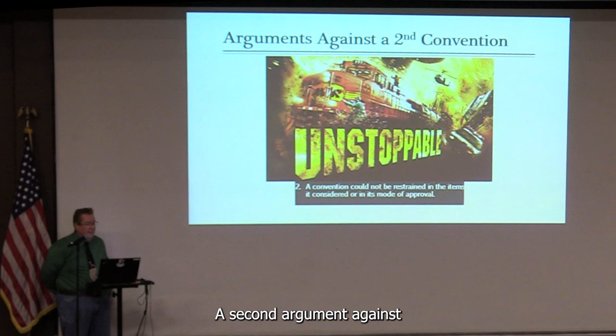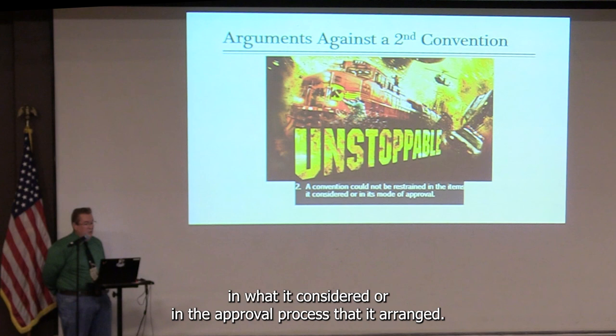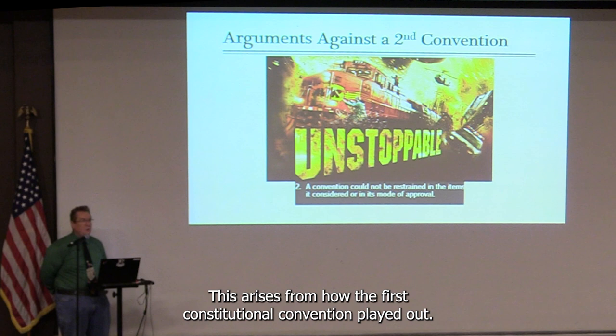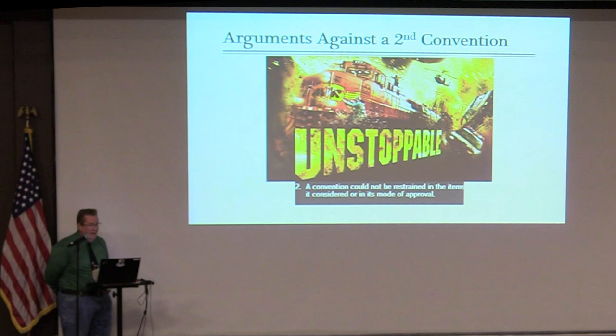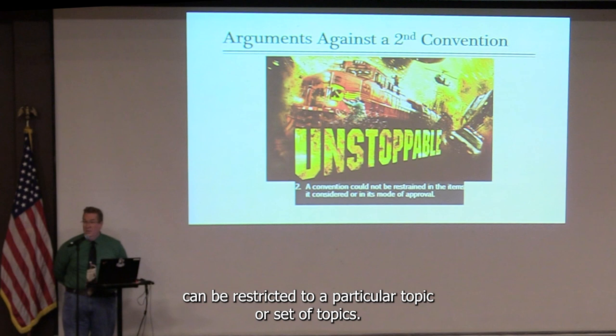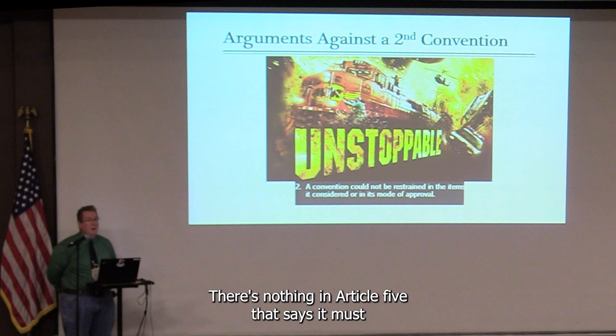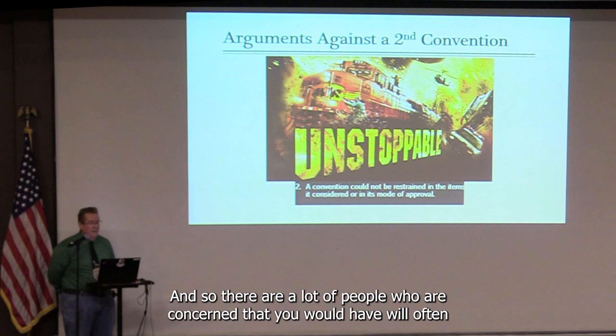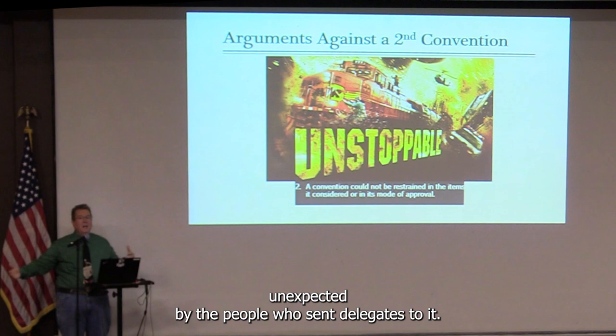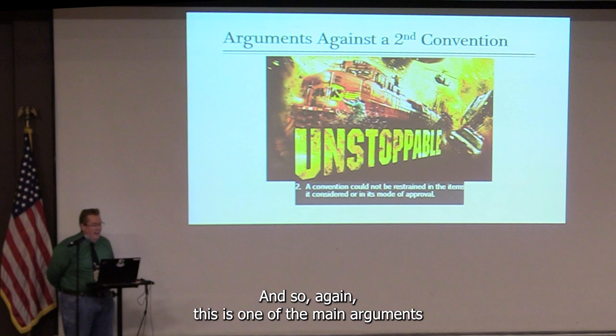A second argument against the convention is that it could not be constrained in what it considered or in the approval process it arranged. This arises from how the first Constitutional Convention played out. There is nothing in Article 5 that says a convention can be restricted to a particular topic or set of topics, and nothing that says it cannot alter the approval process. Many people are concerned about what is often called a 'runaway convention' — one that does something completely unexpected.